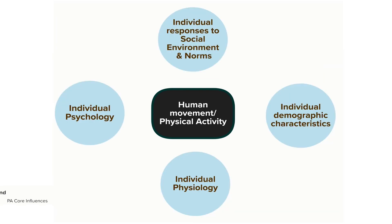Here we've added our first layer to the map. We have four core broad domains of influences on physical activity. They are psychological, physiological, demographic — for example, gender and socio-economic status — and taking account of how people interact with their social environment and norms.